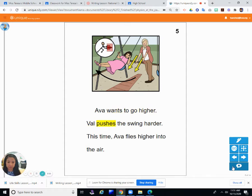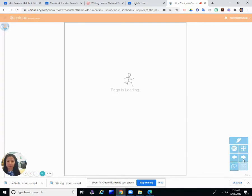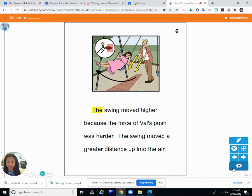Ava wants to go higher. Val pushes the swing harder. This time, Ava flies higher into the air. So now Val pushed the swing harder. So she put a little more force on Ava, pushed her harder, and she goes higher in the air. Ava went higher on the swing. The swing moved higher because the force of Val's push was harder. The swing moved a greater distance up into the air. So the greater force, the more it moves. If you push something a little bit, it's only going to move just a little bit. If you push something harder, it's going to move further.